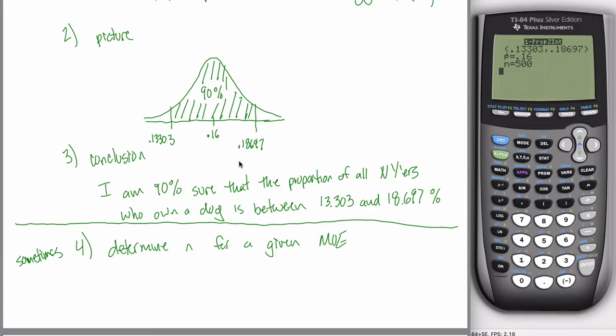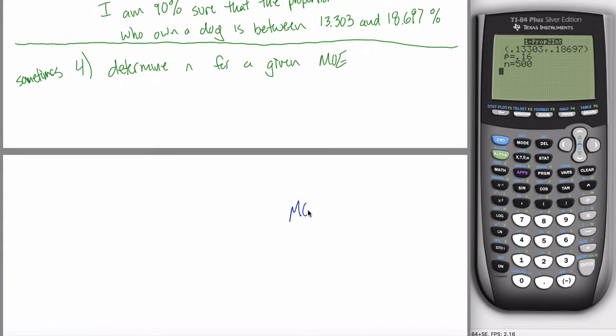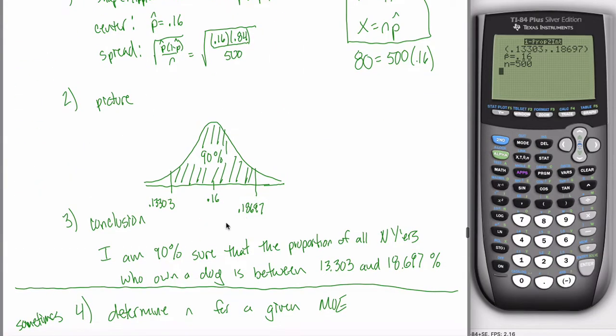That margin of error, there's a formula that creates that. You don't need the formula because you get it straight out of your calculator, but the margin of error is just some number, some special number of whatever your spread is. You go up and down by some special amount.